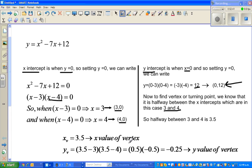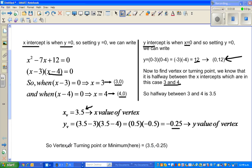So the x value of the vertex, which I write as x_v, is 3.5. And to find the y value of the vertex, I did the same thing as I did for y-intercept. I put 3.5 in place of x. So 3.5 take away 3 times 3.5 take away 4, which is (0.5)(-0.5) equals negative 0.25. So the vertex or turning point or minimum is (3.5, -0.25).